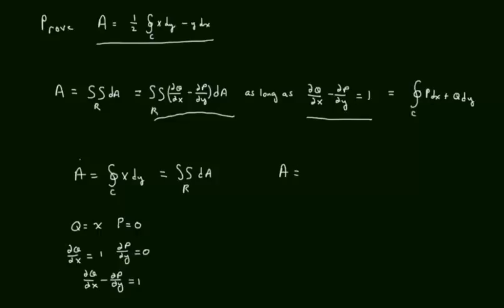Area is also equal to the closed line integral of negative y dx. In this case, p is negative y, q is 0, so partial q partial x minus partial p partial y is 0 minus negative 1, which equals 1. This also equals area.